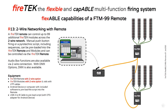As shown with the multiple module configurations, the FireTech system has a two-wire networking option. A FireTech remote can control up to 99 additional FireTech modules across a two-wire network. Manual push-button firing or a pyrotechnic script including sequences can be preloaded into the FireTech remote and modules and controlled via the FireTech remote. Audio box functions are also available via the two-wire connection. With the DMX option, DMX is also available.